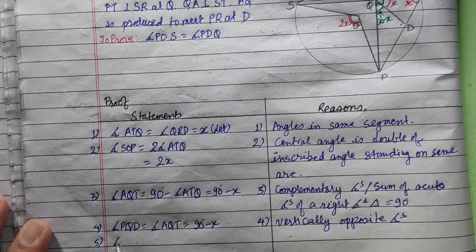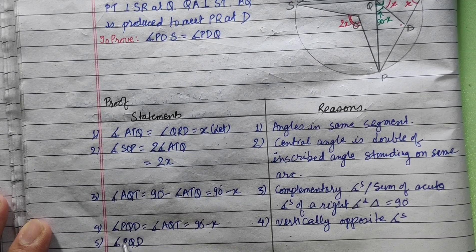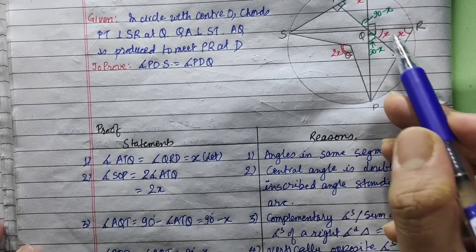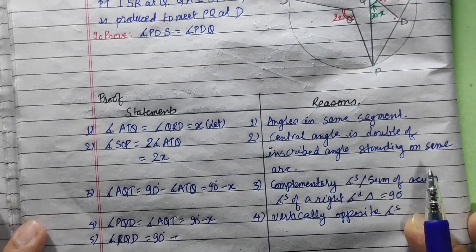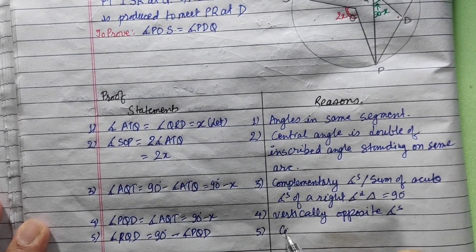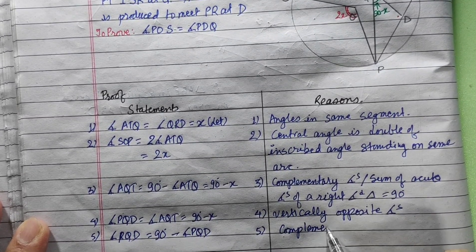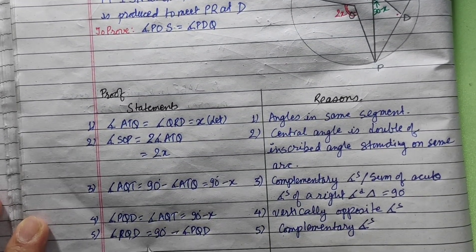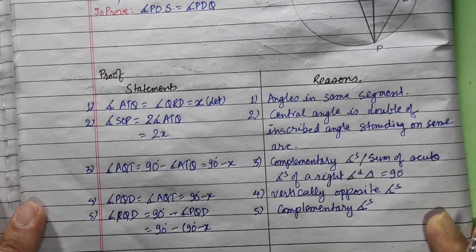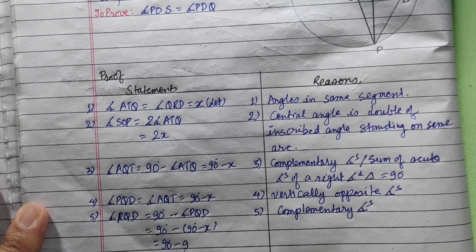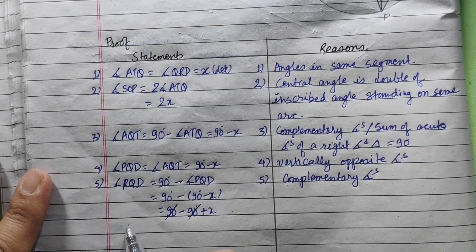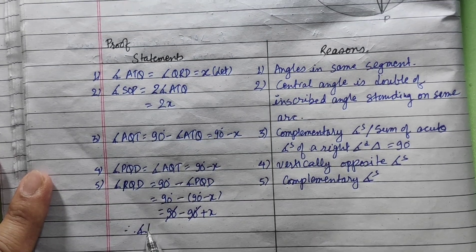Now for angle RQD: complementary gives us 90 minus angle PQD. Simplifying: 90 minus (90 minus x) equals 90 minus 90 plus x, which equals x. So angle RQD equals x.